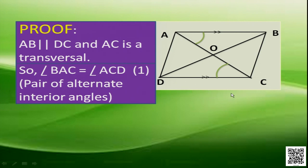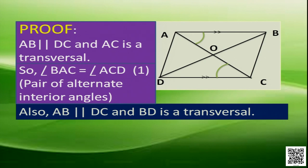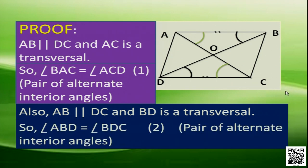We can also consider another set of lines: AB is parallel to DC, and BD is the transversal. Then angles ABD and BDC are the alternate interior angles. So we can write angle ABD is equal to angle BDC.